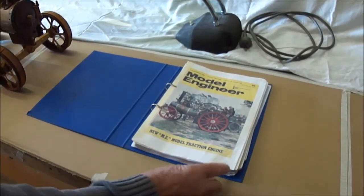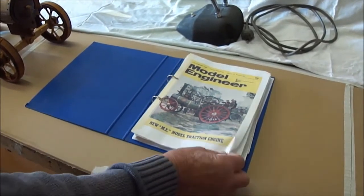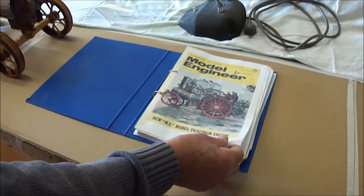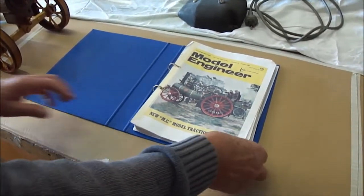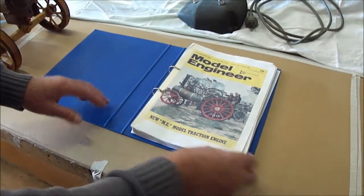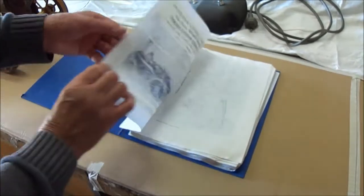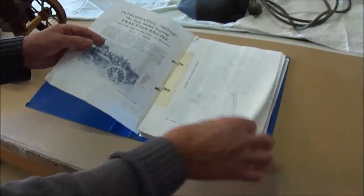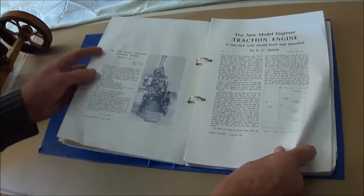This is the Model Engineer book that I used as a guide. My son Chris in Sydney took it off the internet - it started in 1969 and went to 1970. It's a whole lot of these magazines and has all the instructions and everything that I used to make it.